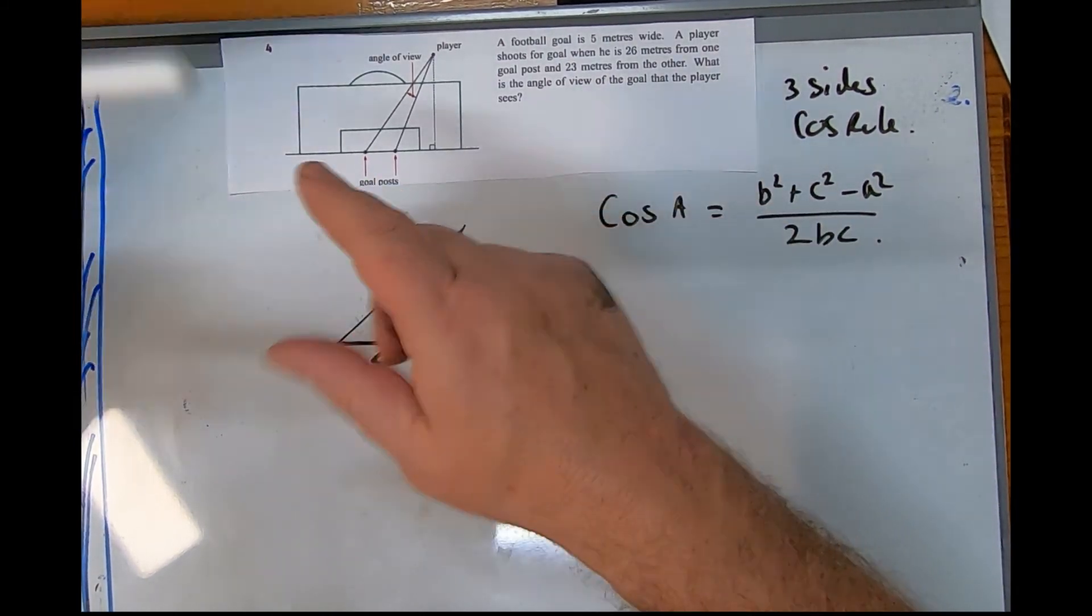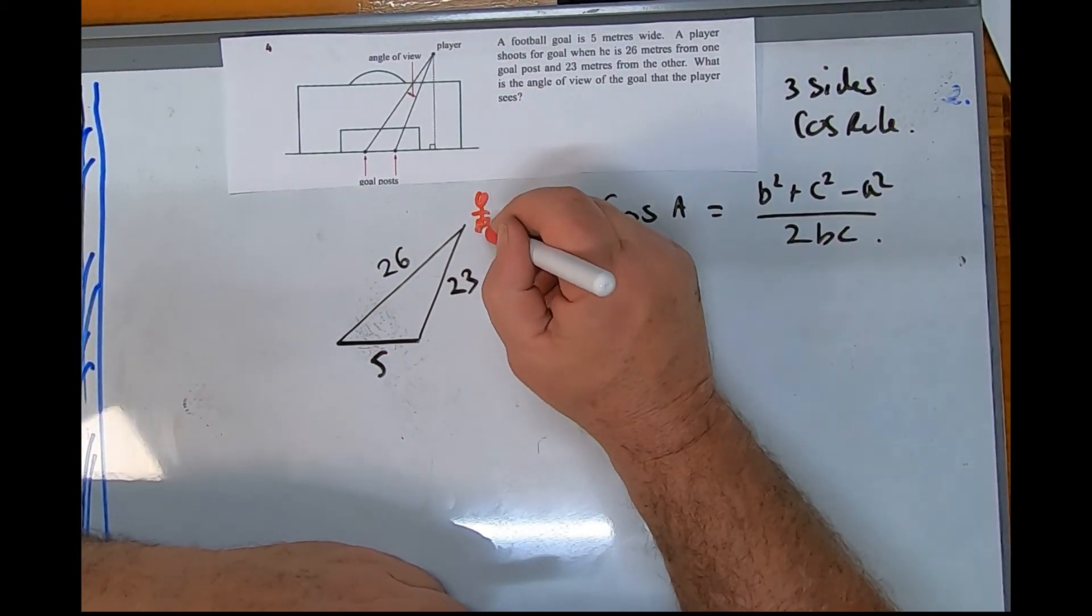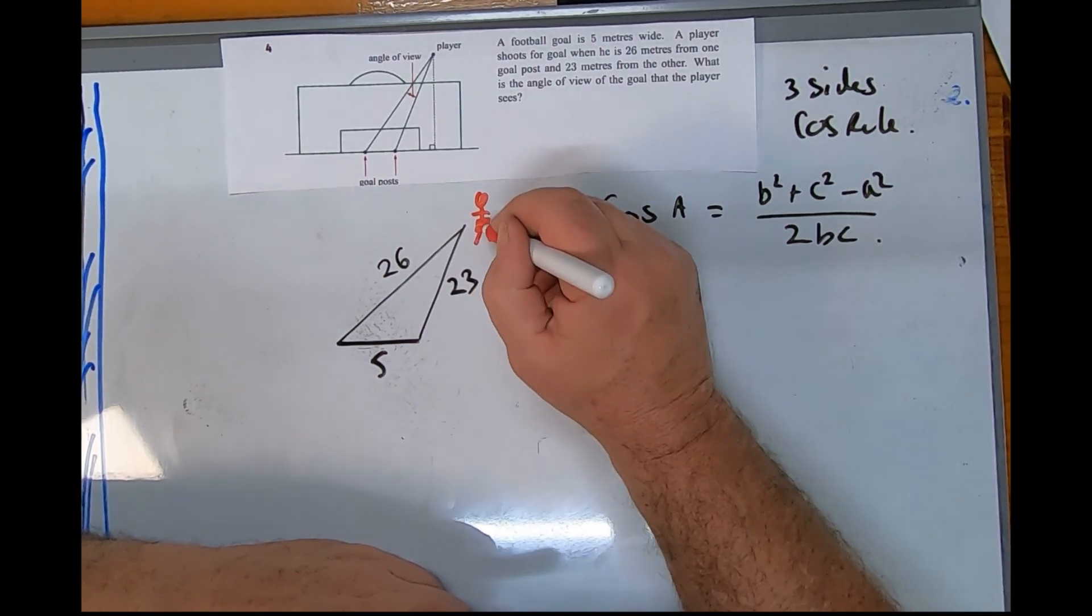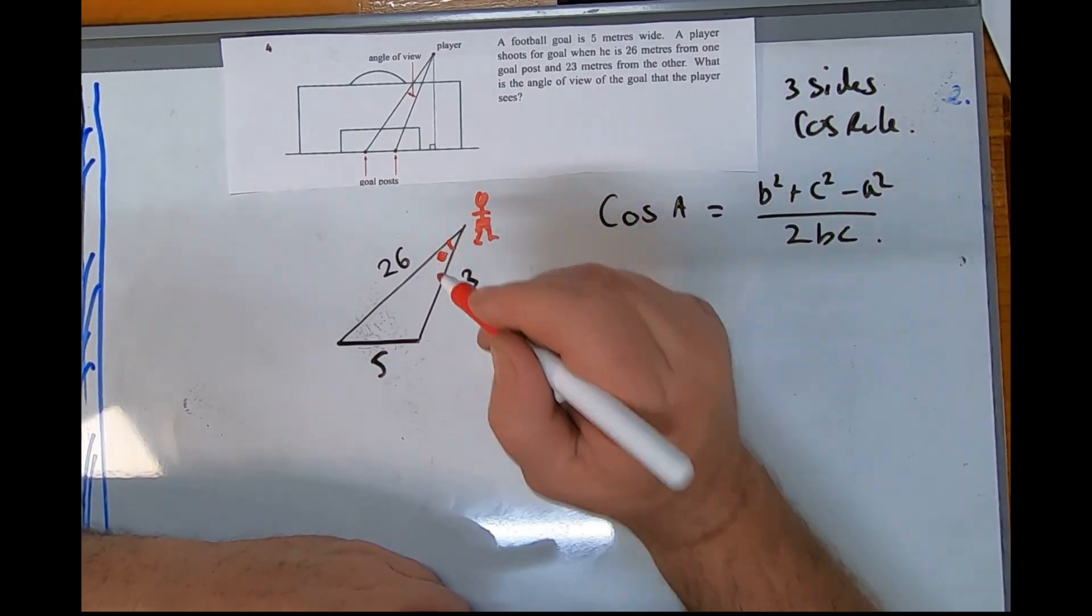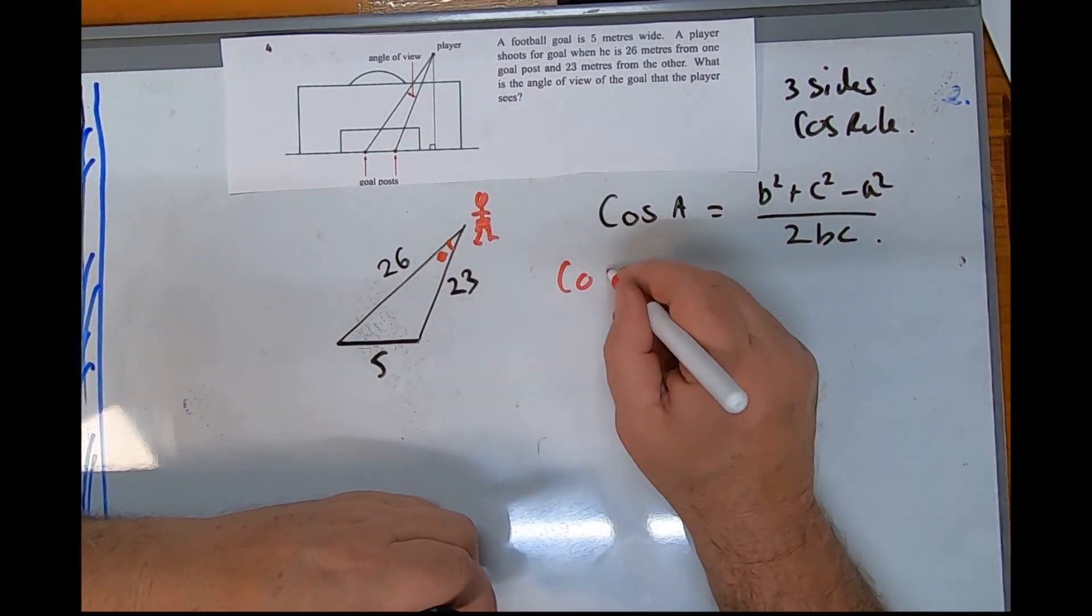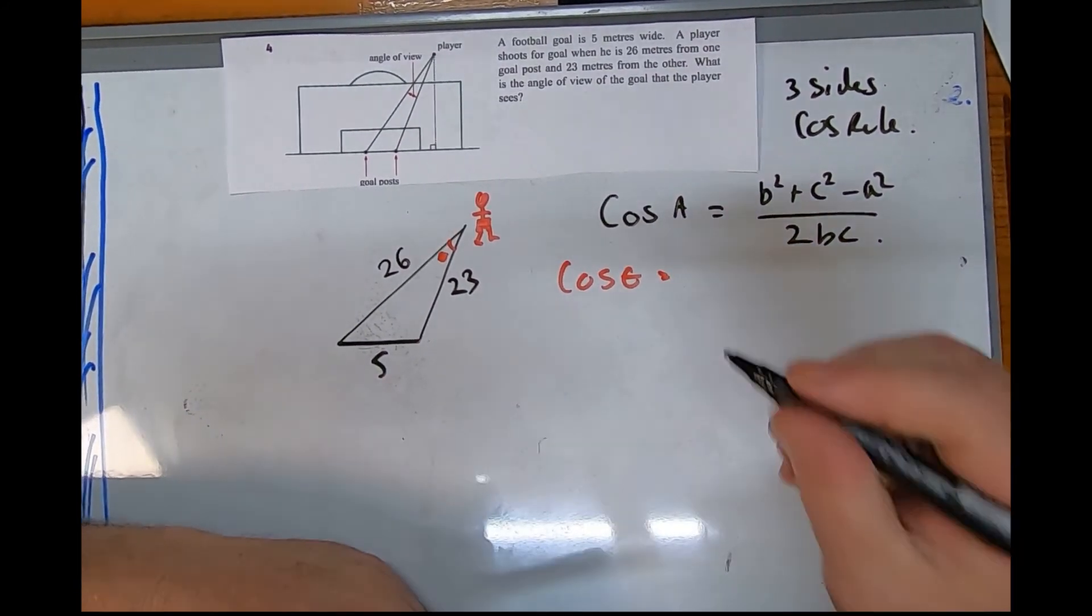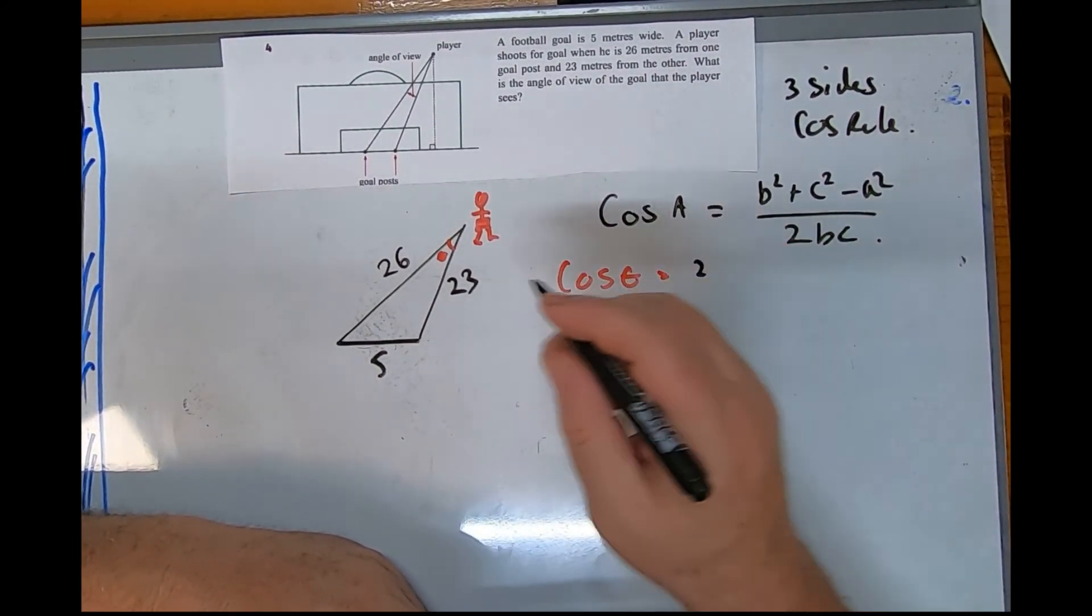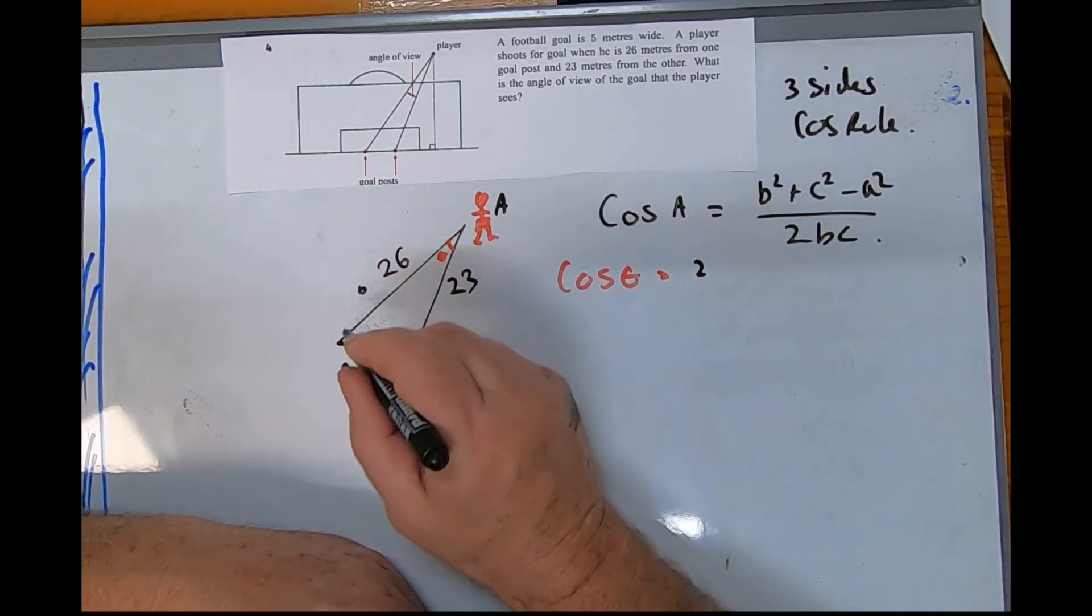So if I'm standing here with my groovy soccer shorts, big baggy shorts, I'm going to kick the ball over here. That's where the view is, there's my letter. So cos theta equals, a little a, b will be c.